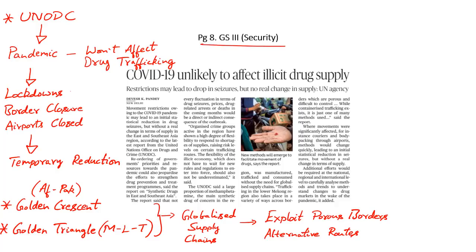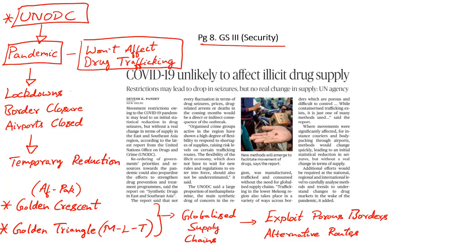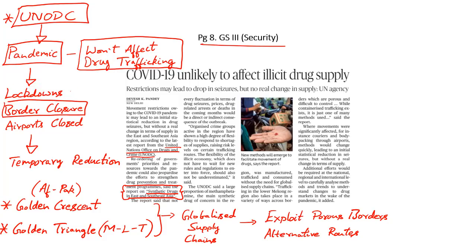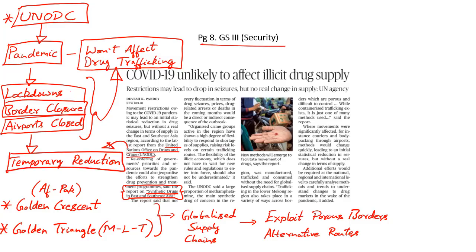The UN Office on Drugs and Crime has said that the COVID-19 pandemic is unlikely to significantly affect drug trafficking and supply. Its report 'Synthetic Drugs in East and Southeast Asia' analyzes trafficking routes and pandemic impact. While pandemic lockdowns have closed borders and airports, causing a temporary reduction in drug availability, these restrictions are unlikely to have a medium to long-term effect because drug traffickers and organized criminal groups are not entirely dependent on globalized supply chains.